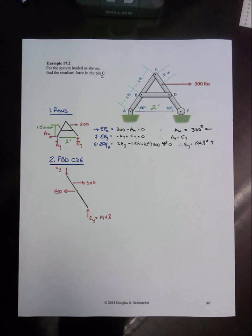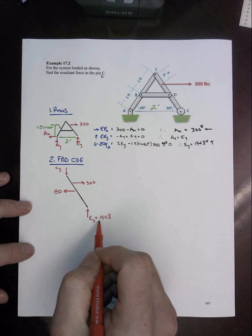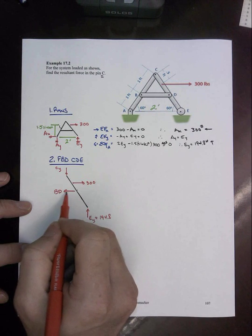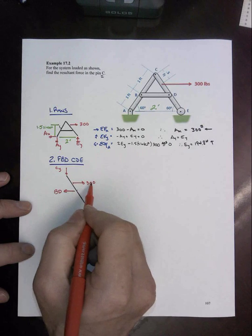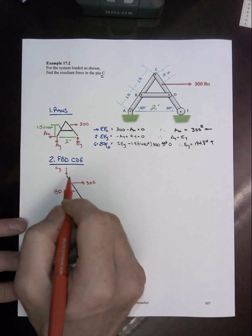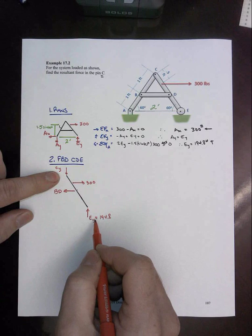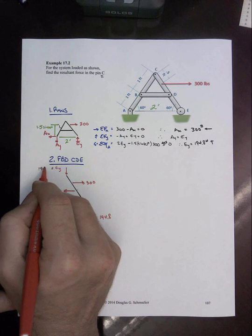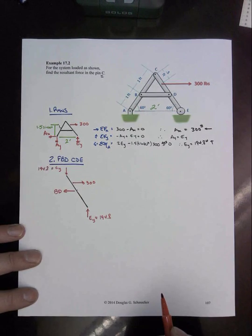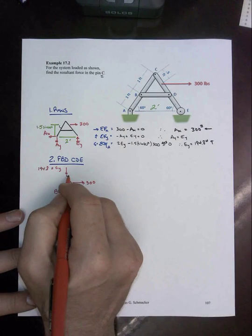It's got only a roller reaction to deal with. We have the two-force member BD that's in the horizontal direction, I'm going to assume is pulling to the left. We have the 300 pound force pulling to the right. The CY is actually quite easy from sum of forces in the Y, it's got to be going downwards opposite of EY, so it's 194.8 up there.